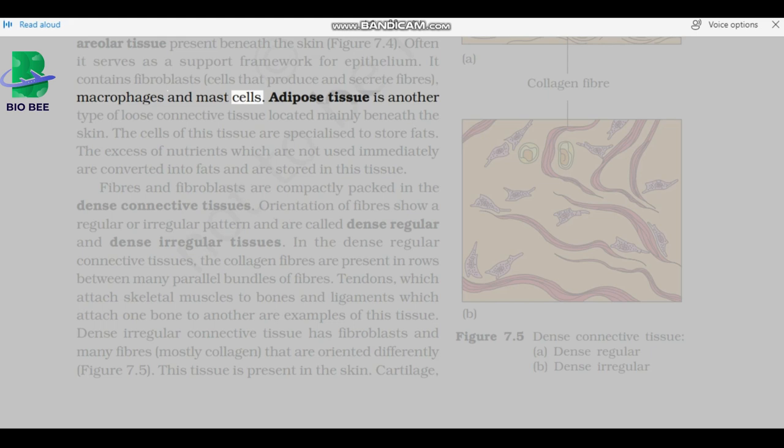Adipose tissue is another type of loose connective tissue located mainly beneath the skin. The cells of this tissue are specialized to store fats. The excess of nutrients, which are not used immediately, are converted into fats and are stored in this tissue. Fibers and fibroblasts are compactly packed in the dense connective tissues.